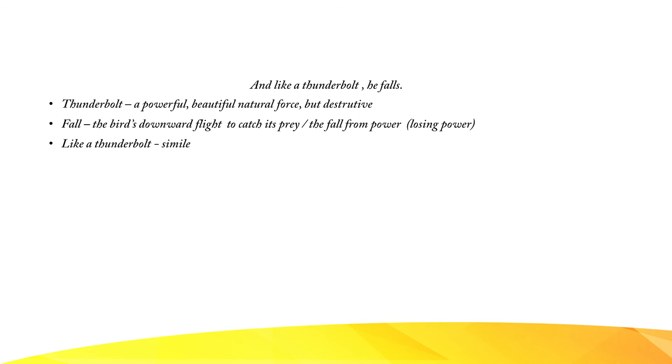And like a thunderbolt, he falls. In the final line the bird makes a grand dive towards the sea, probably to catch its prey, like a thunderbolt. A thunderbolt is a powerful, beautiful natural force but at the same time it is destructive. The thunderbolt suggests the swiftness and suddenness of the bird's downward flight, but it also brings out the destructive nature of the bird. Although the bird is magnificent and powerful, it is dangerous and destructive. When it comes down like a thunderbolt, the prey or victims of this bird would not stand a chance. This shows that the descent of the powerful on their victims or ordinary people is always well-timed, focused, and quite unexpected.